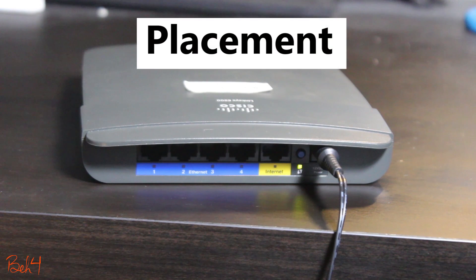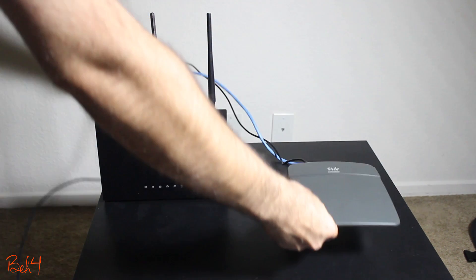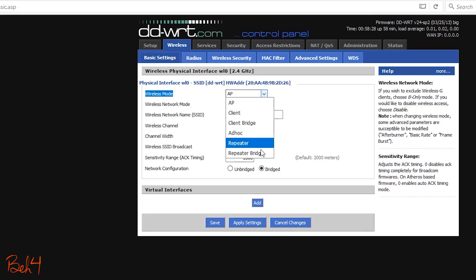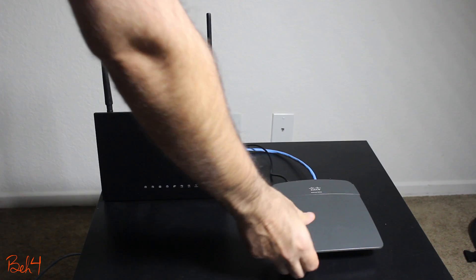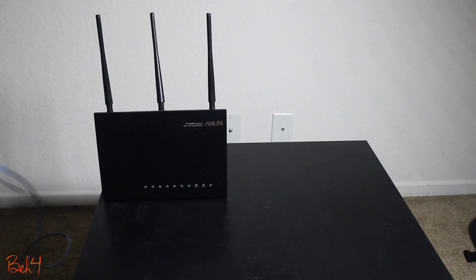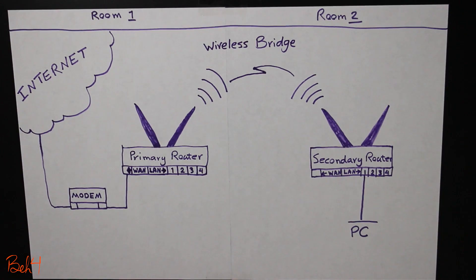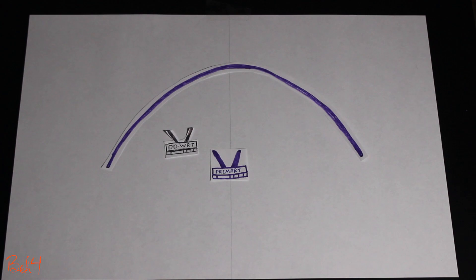Finally, let's talk about the secondary router's placement. I personally found it easier to first put the secondary router as close as possible to the primary router while configuring the repeater bridge. After I'm done and have tested to make sure the repeater bridge is working fine, then I would take it to its new location, which should obviously be within the range of the primary router. If I'm only using the secondary router as a wireless bridge but not a repeater — meaning only wired devices are going to be connected and it's not broadcasting any SSIDs — then as long as it is within the range of the primary router, it should be fine.